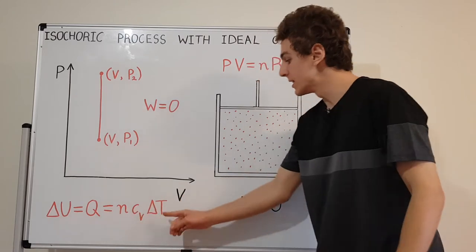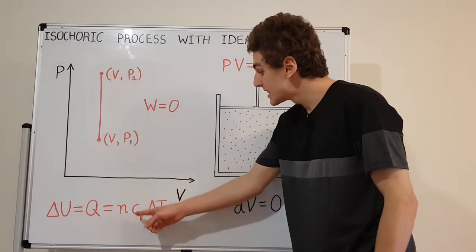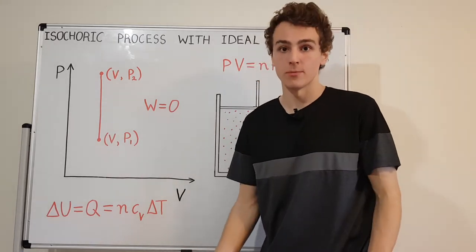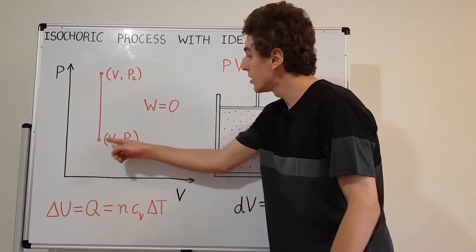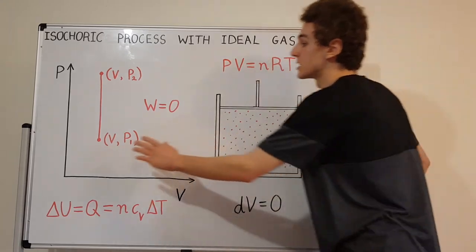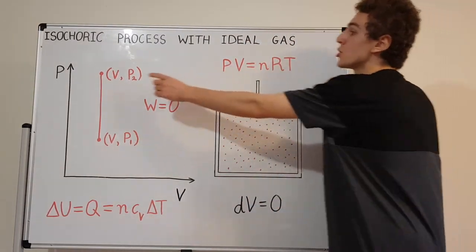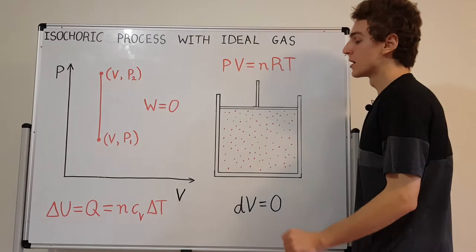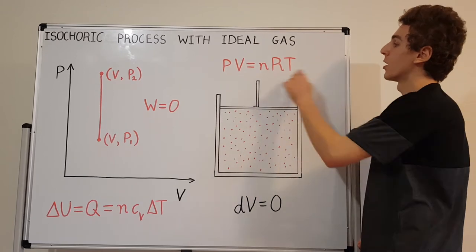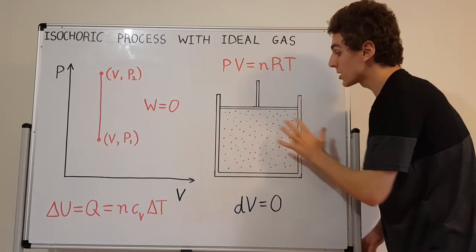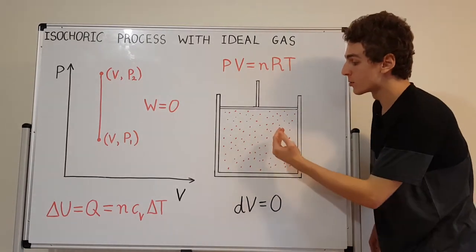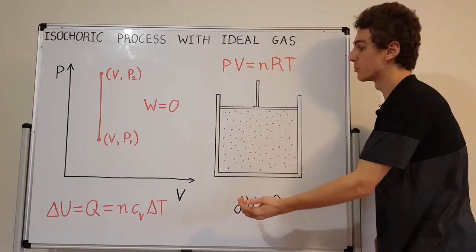That change in internal energy equals nCᵥ delta T, where n is the number of moles, Cᵥ is the specific heat capacity at constant volume, and delta T is the change in temperature. Keep in mind, temperature is free to change, because temperature is defined by the product of pressure and volume. A smaller product gives a smaller temperature, a larger product gives a larger temperature. The number of moles and R are constant, and this is a closed container, so no matter is exchanged with the surroundings.